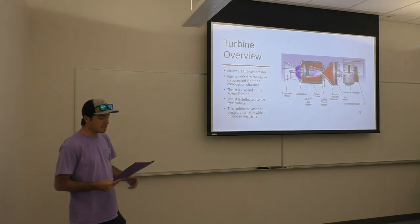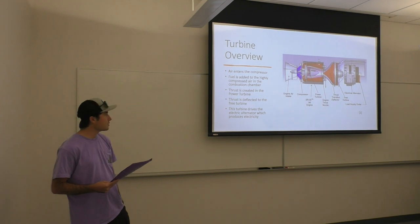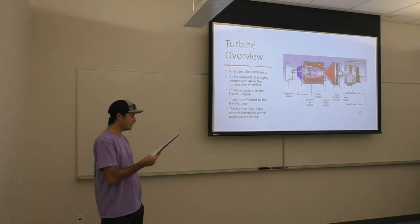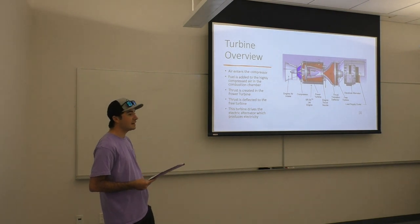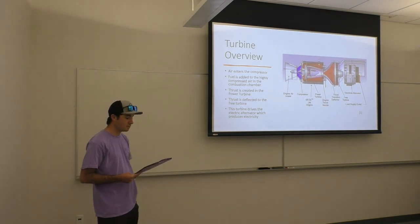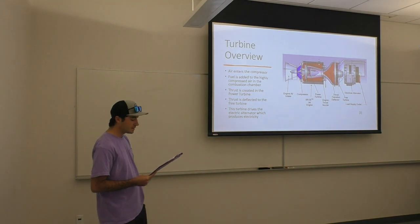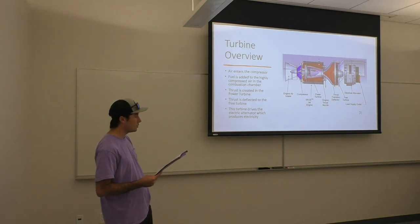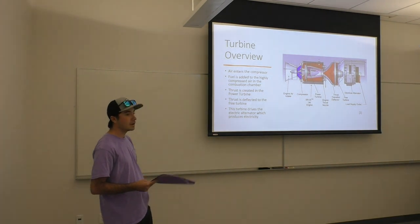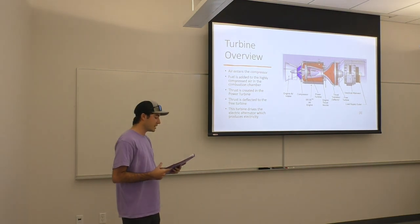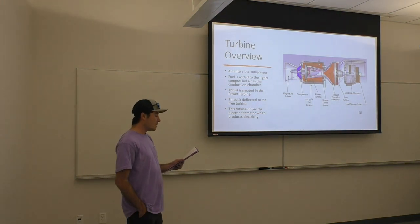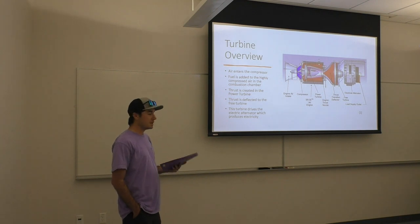The turbine overview shows each step involved in the cycle. First, air enters the turbine intake, then it's sucked into the compressor. From there, fuel is added to make a highly compressed air-fuel mixture. This creates a highly pressurized, energy-rich air-fuel mixture. Once the fuel is injected, it is ignited, which then results in thrust.